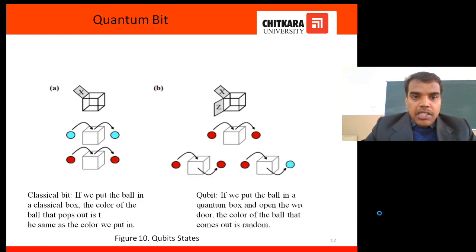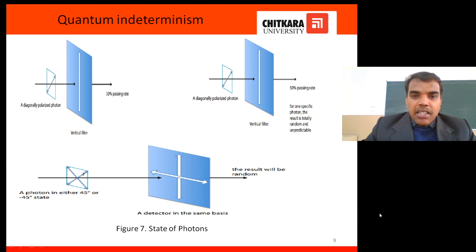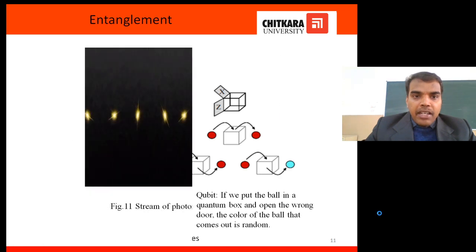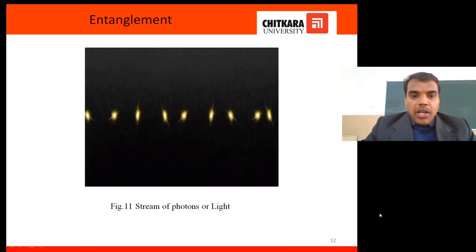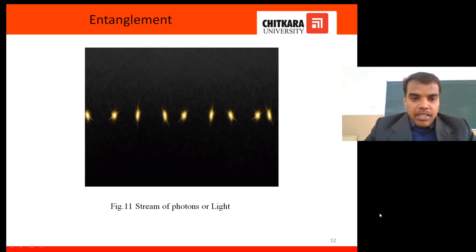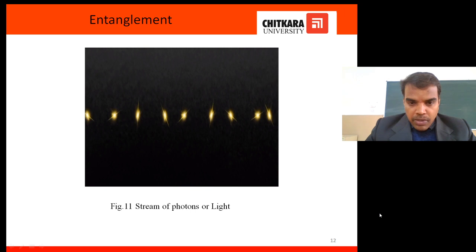We have discussed polarization, which is the first main property of quantum computing. The second important property is entanglement. Here we have nine different photons arranged in a random fashion. Entanglement means that whenever you polarize the first photon, it affects the second, the second affects the third, and so on in a cascading effect.